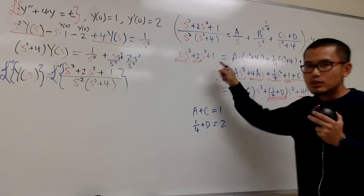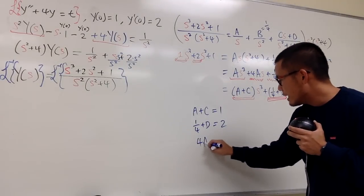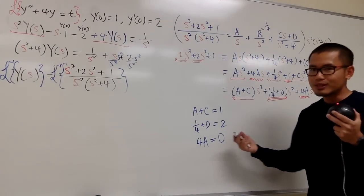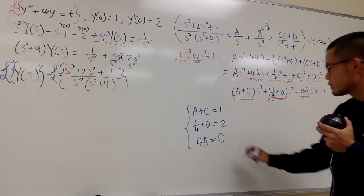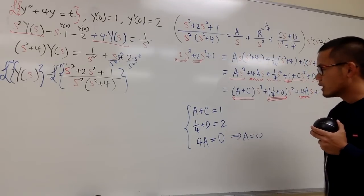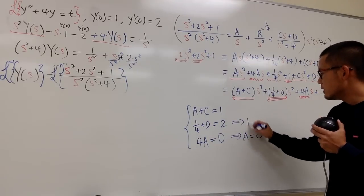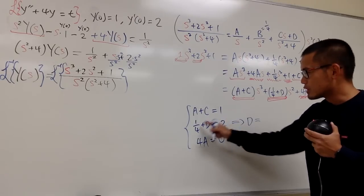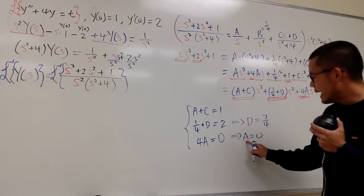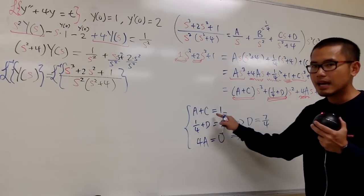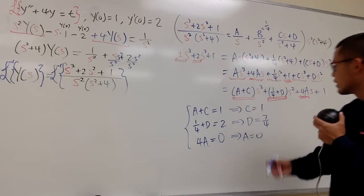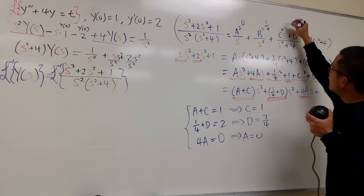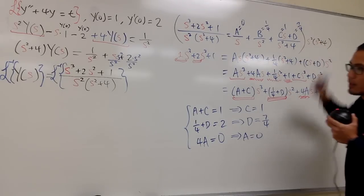From matching coefficients: we have 4A as the s term coefficient, but there's no s term on the left, so 4A equals 0, meaning A equals 0. From the s squared equation, 1 over 4 plus D equals 2. Since 2 equals 8 over 4, we get D equals 7 over 4. And since A equals 0, plugging into A + C = 1 means C equals 1.